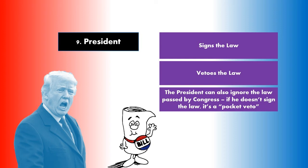The president has three options. First, the president can sign the bill into law — this is what happens if the president approves the bill. We're going to have one of those fancy signing ceremonies. The president will write his name on the bill, the congressmen will all stand around, everyone will celebrate. We have finally turned a bill into a law.